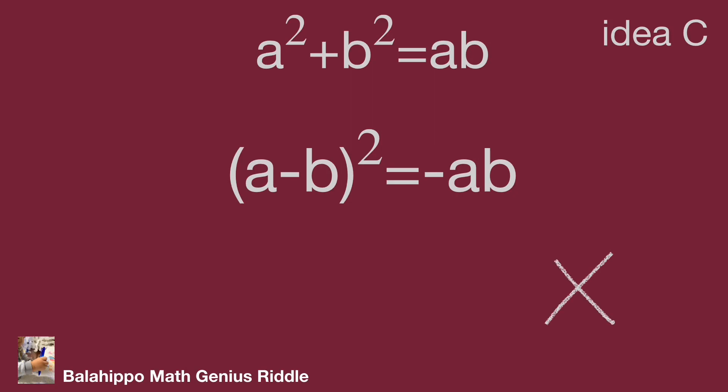We have shared three different ideas to prove that a squared plus b squared equal to ab has no positive integer solutions. You may have tried more approaches to prove this. Hope you enjoyed the video — thank you!